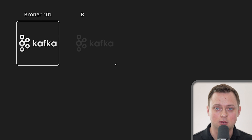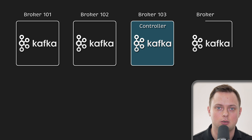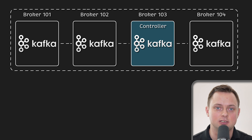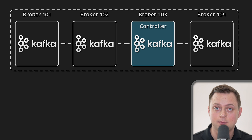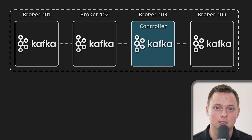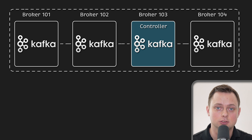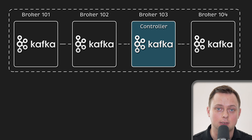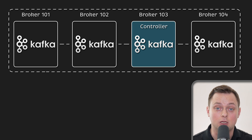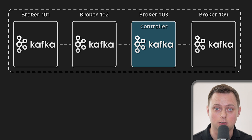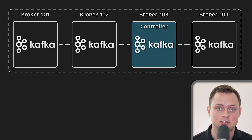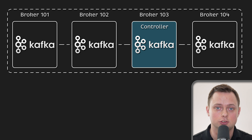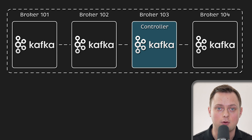Every Kafka cluster has a single active Kafka controller. It is responsible for managing partitions and replicas and performing administrative tasks such as reassigning partitions. For example, if one Kafka broker goes down with a partition leader, the active controller will reassign that function to another broker that already has all the replicated data to act as partition leader and serve data. The controller service runs on every broker in the Kafka cluster, but only one broker can be active at any point in time. It used to be managed and elected by ZooKeeper, but in newer versions it is elected internally using the Raft protocol.